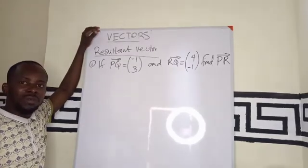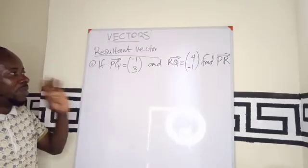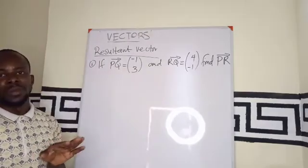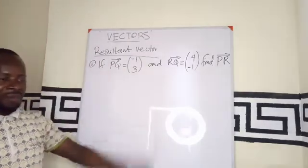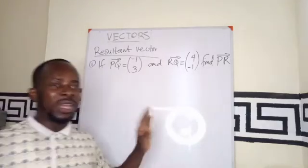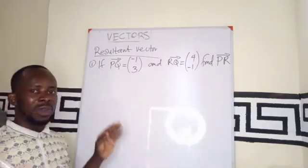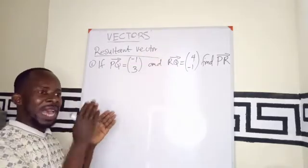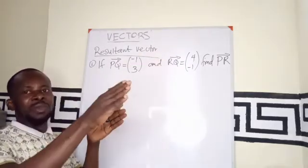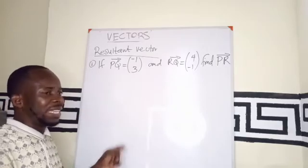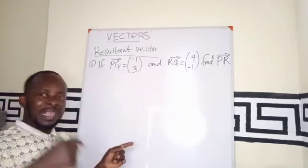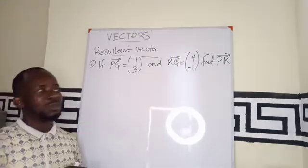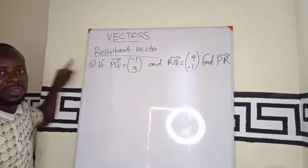From the previous videos, we mentioned that if a question is given to you involving vectors and you are asked to find another vector, you look at the endpoint. We know the vector is always from a particular point to another point, so from A to B. If there is another letter, which could be let's say C, that simply means we are having a triangle of a vector. So definitely that will give us our resultant vector.